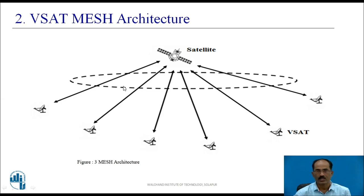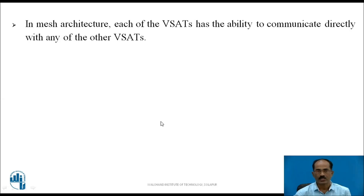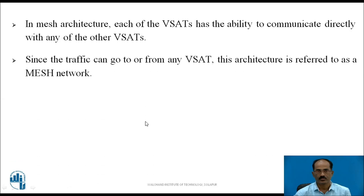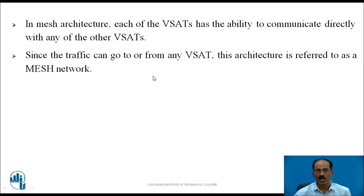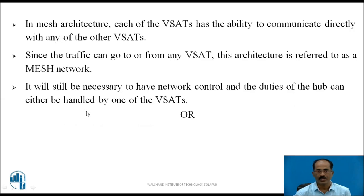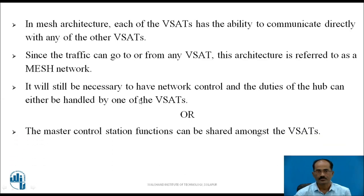In the VSAT mesh architecture, there is no hub or central control station. One of the VSATs acts as a control station, or several can work together as a master control station. Each VSAT has the ability to communicate directly with any of the other VSATs. Since traffic can go to or from any VSAT, this architecture is referred to as a mesh network. It is still necessary to have network control, and the duties of the hub can be handled by one of the VSATs, or the master control station functions can be shared among the VSATs.